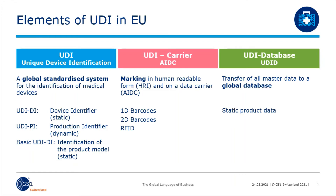In the middle, you can see the UDI carrier. Here, AIDC stands for Automatic Identification and Data Capture. For identification, UDI requires either a one- or two-dimensional barcode or RFID. Also note that the information in the symbol must also be visible in a human-readable form.